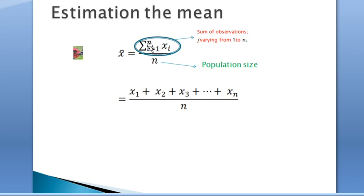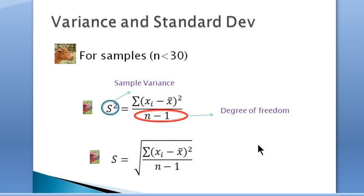Now for the variance and standard deviation we have two cases. The first case is when the number of observations is less than 30. Here we use the sample estimate where the variance is denoted s squared.